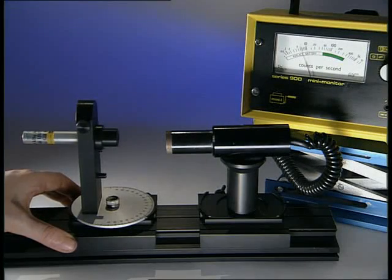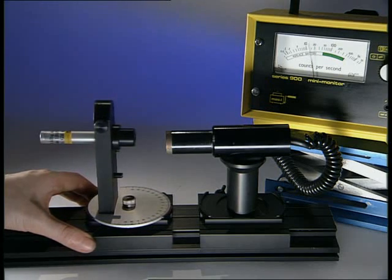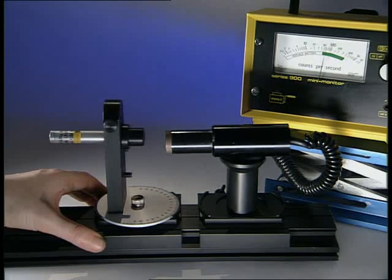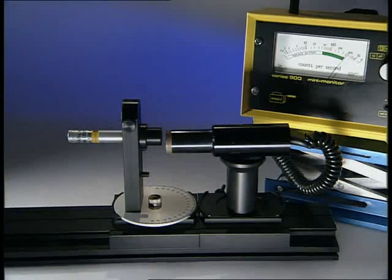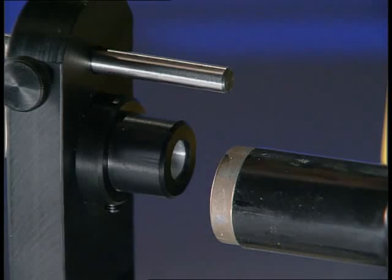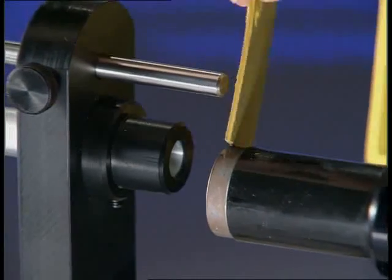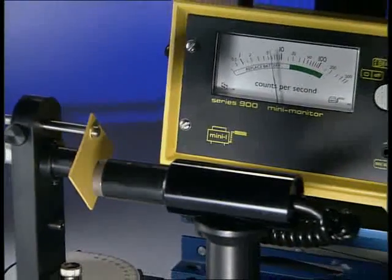So how does alpha radiation behave? This is an alpha source. At this distance, the count rate is about 500 per second. Place a thick sheet of paper in its path and all the alpha radiation is absorbed.